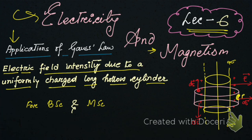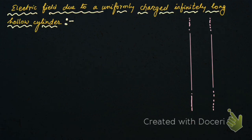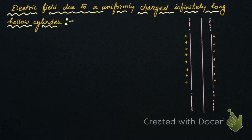Now let's start. Suppose we have an infinitely long cylinder — this is a positively charged infinitely long cylinder, with charges uniformly distributed over its surface. This is the axis of this cylinder, and its radius is capital R. We have to calculate the electric field at a point P.